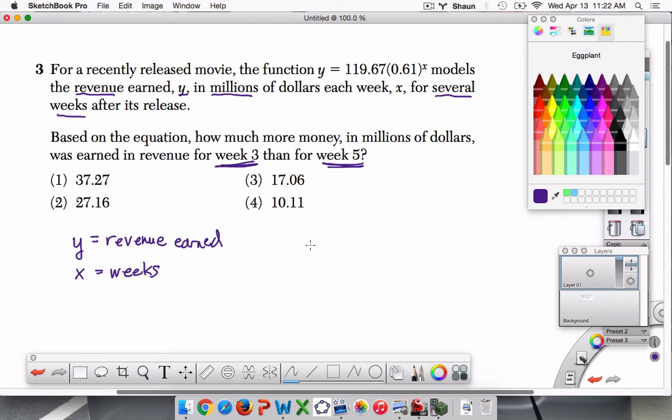Now the equation. So first, let me write it out directly. y equals 119.67. This is our starting value. I'm going to talk about why that makes sense in a second. And then 0.61 to the x power. Well, x is the number of weeks. We just labeled that. y is the revenue.